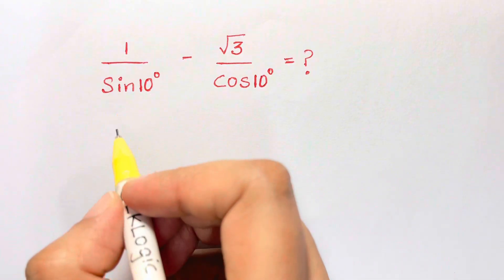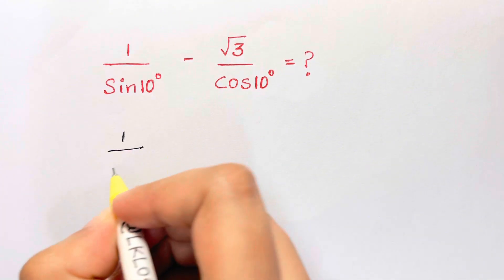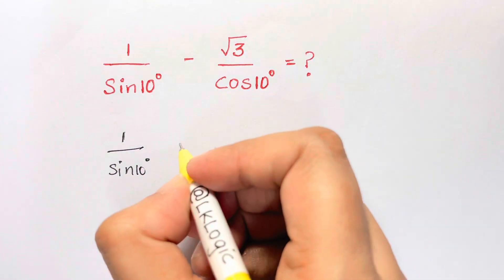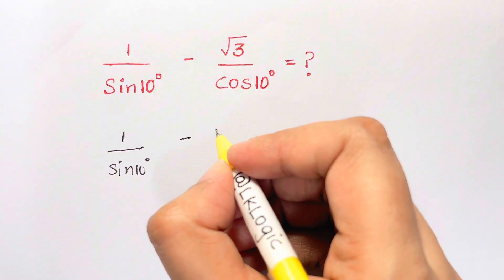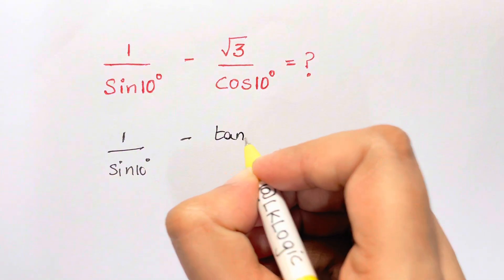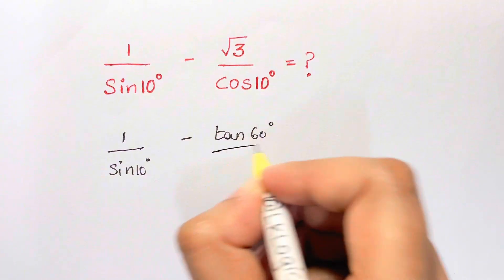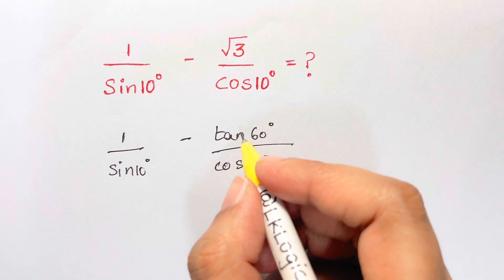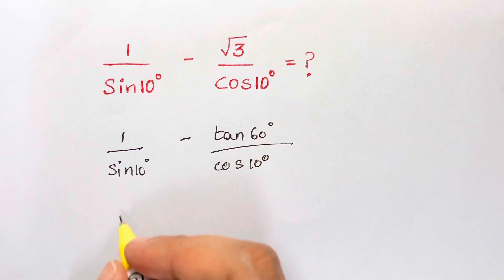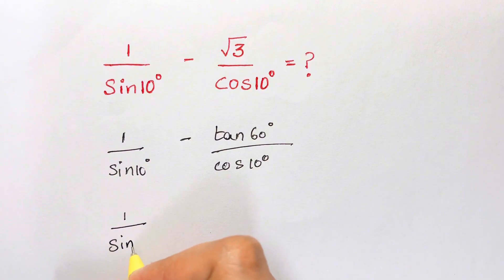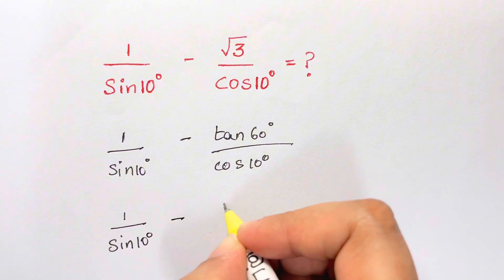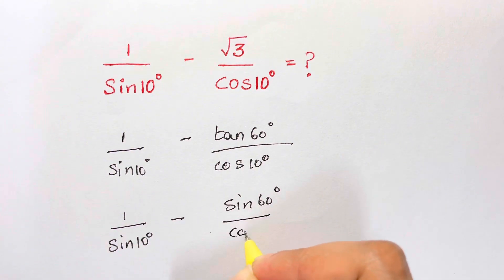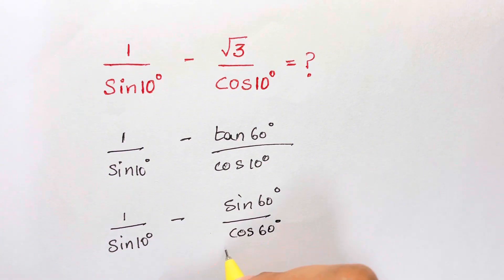Here we have 1 over sin(10°), and √3 — what is that in terms of trig? It's sin(60°) over cos(60°). Now let's convert: 1 over sin(10°) minus sin(60°) over cos(60°) over cos(10°).